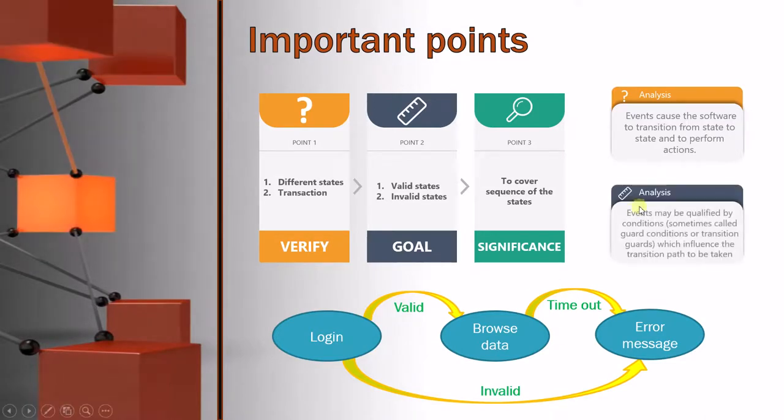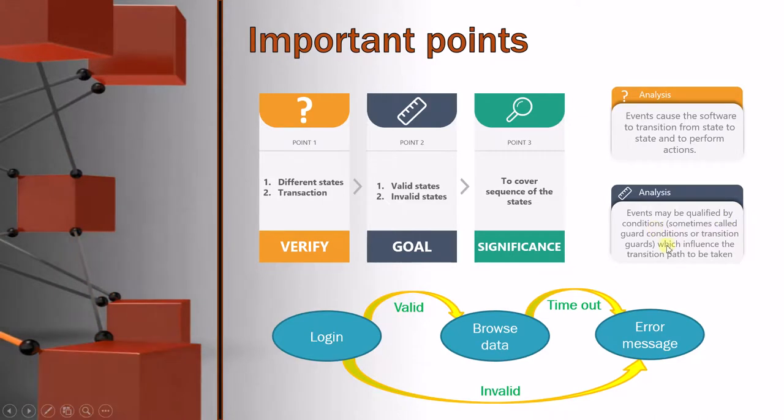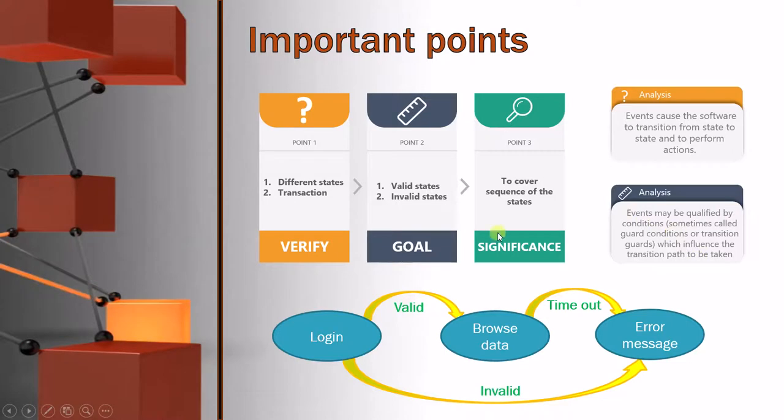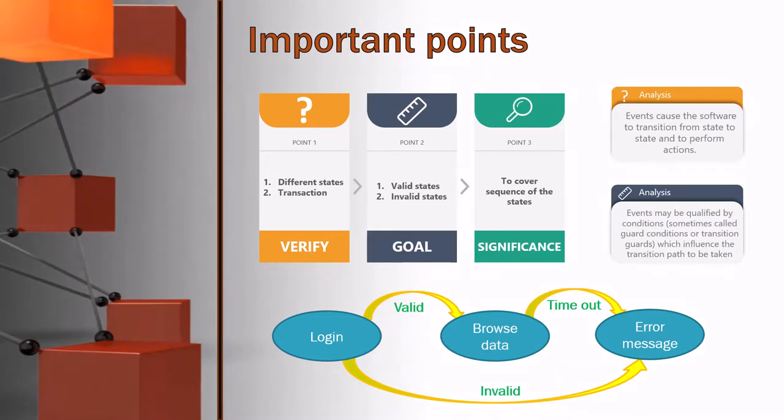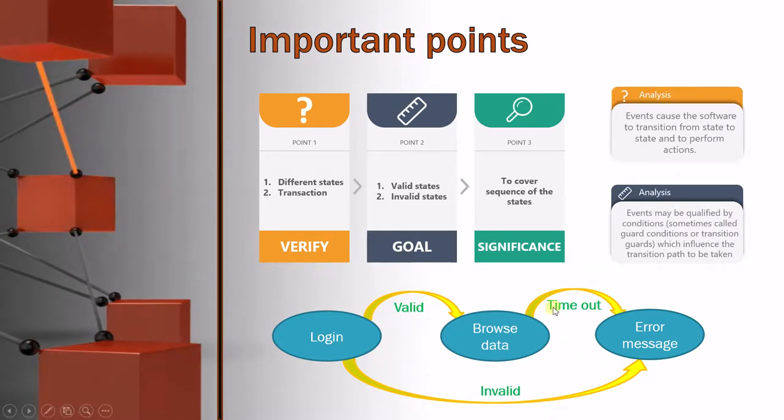The next point is: Event may be qualified by conditions which influences the transaction path to be taken. So sometimes when event is negative or positive—that means valid or invalid—that will result in different conditions so that we take a different path.